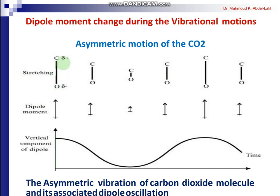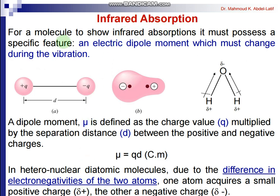In the asymmetric stretching motion of CO₂, there is elongation with a dipole moment component in one direction, returning to the ground state — which should be zero — then elongating again. This also looks like a sine wave. There is a change in the vertical component of the dipole moment, so it can interact with infrared light and give rise to spectra. For a molecule to show infrared absorption, it must possess an electric dipole moment that changes during vibration; otherwise there is no interaction.